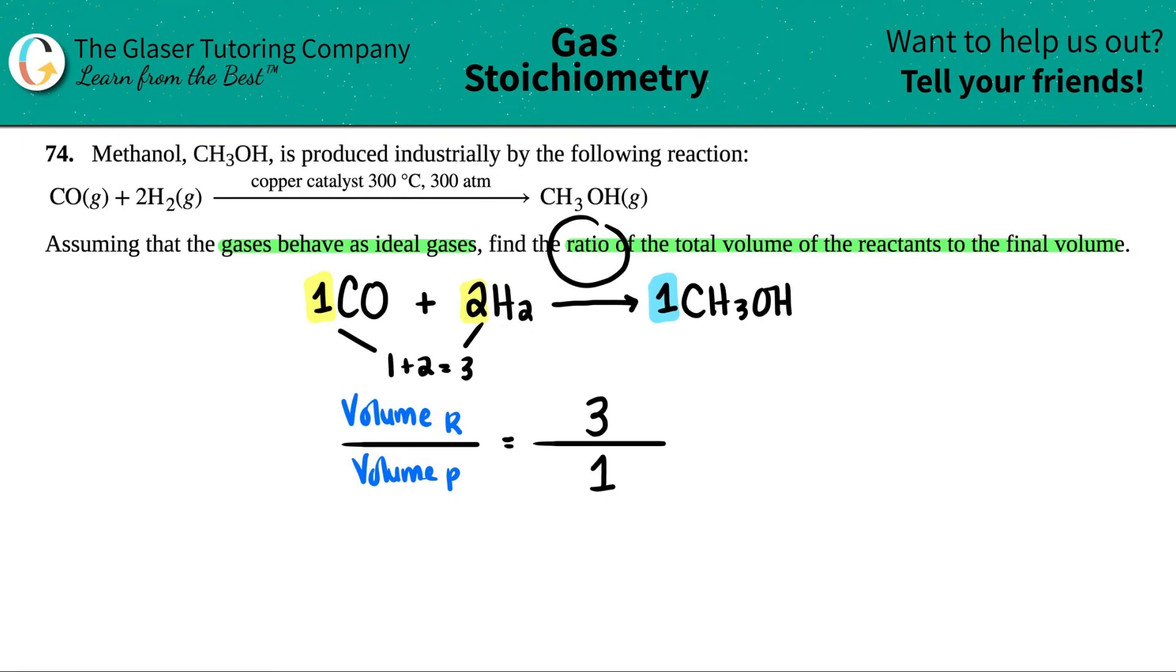That's the ratio. Remember, ratios don't have any units, so it's just a 3 to 1 ratio. That means that the volume of the reactants would be 3 times more whatever the volume of the products is. So if the volume of the products is 9, I would just have to take 9 times 3, and then it would be 27 for the reactant side. But this is the answer. It's just a 3 to 1 ratio.